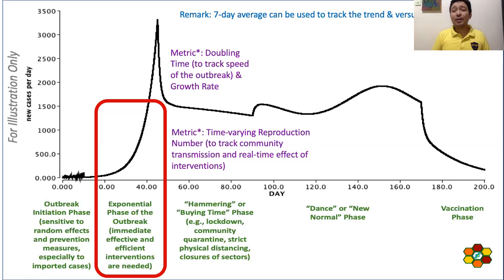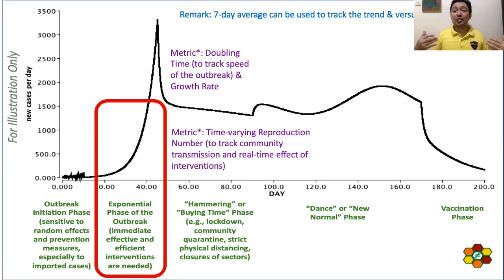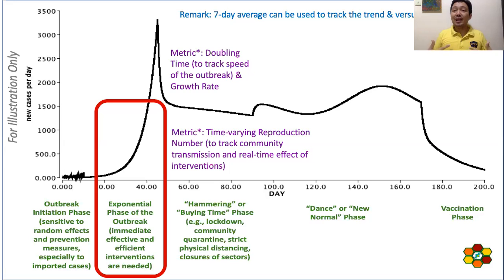The reproduction number is a metric used in epidemics to measure the contagiousness of a disease in a certain setting. It measures the average number of secondary cases that can be directly infected by a primary case. So if the reproduction number is two, a certain person can infect on average two people, and those two people can on average infect another two people each — resulting in an exponential increase.